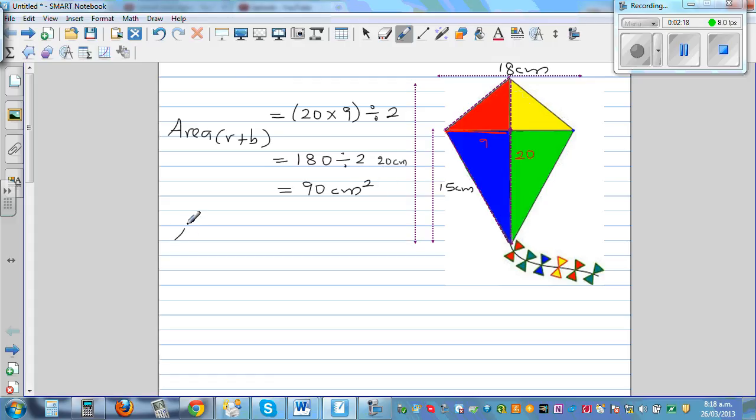Now, what is the area of the green plus the yellow triangle? That would be the same, because you have the same base and same height. So that will also be 90 centimeter squared.